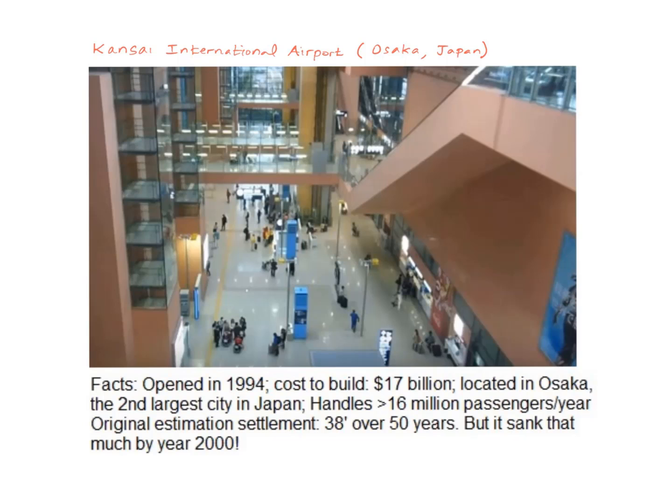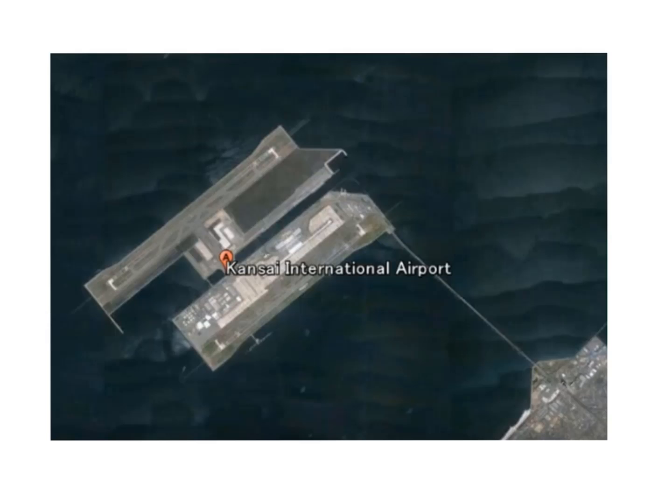Why was it going to settle 38 feet? Well, the airport was built offshore about 5 miles from the coast, and the seabed in this area consists of highly compressible clay. So the normal settlement calculations indicated that the columns were going to settle by about 38 feet. So they knew that before they built the airport, but they still went ahead and built it.